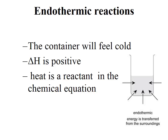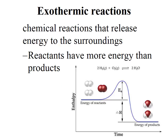Exothermic reactions are chemical reactions that release energy to the surroundings. The products now have less energy than the reactants — we go from reactants down to products. So Delta H is negative because products minus reactants gives a negative value when reactants have more energy than products.